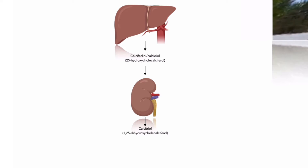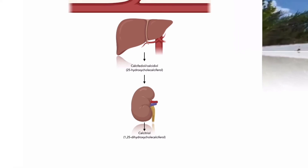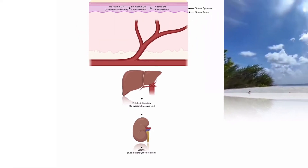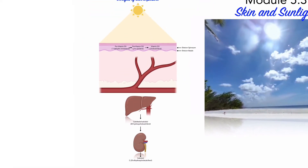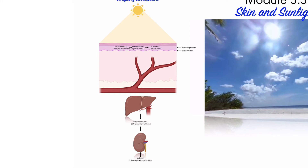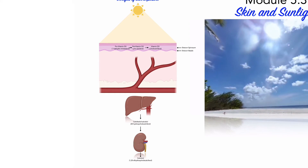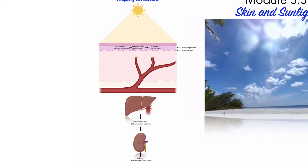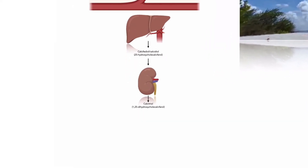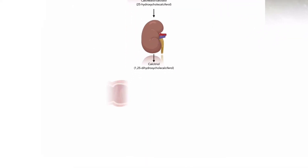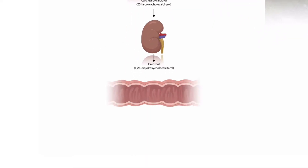Thus, from initial exposure of skin cells to sunlight, through a series of chemical reactions, an active form of vitamin D3 is ultimately released into circulation from the kidneys. Calcitriol is essential for the absorption of calcium and phosphorus in the small intestine.